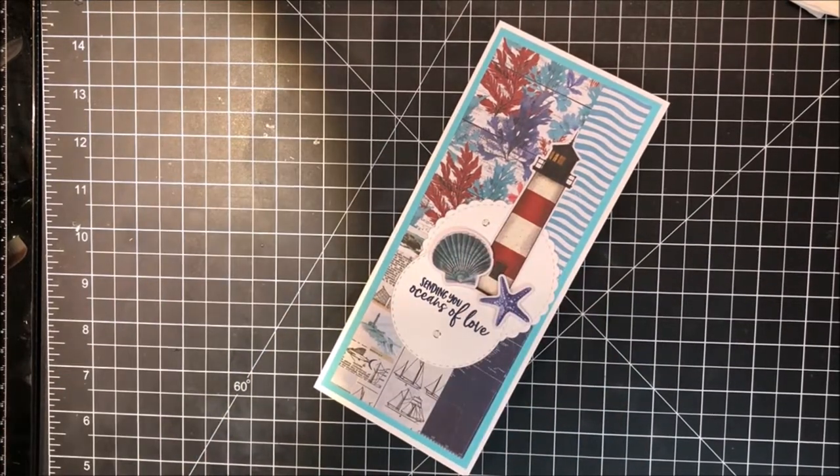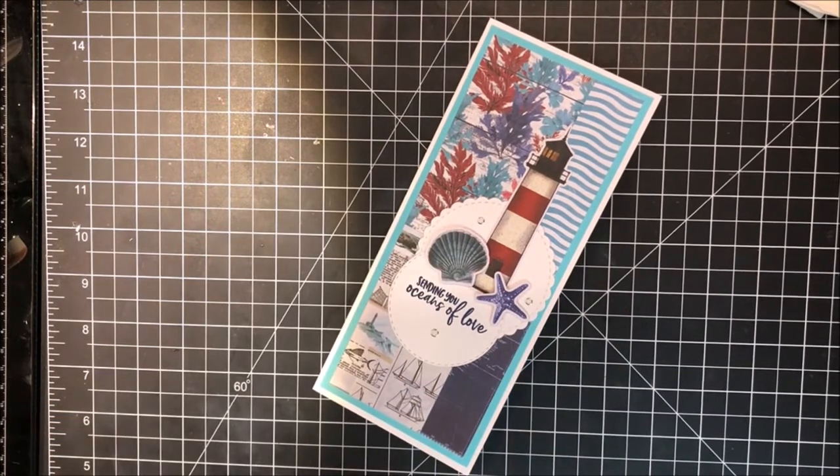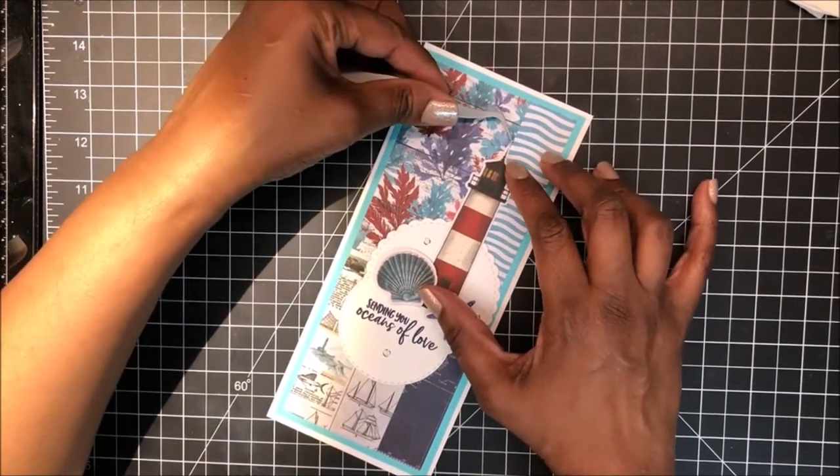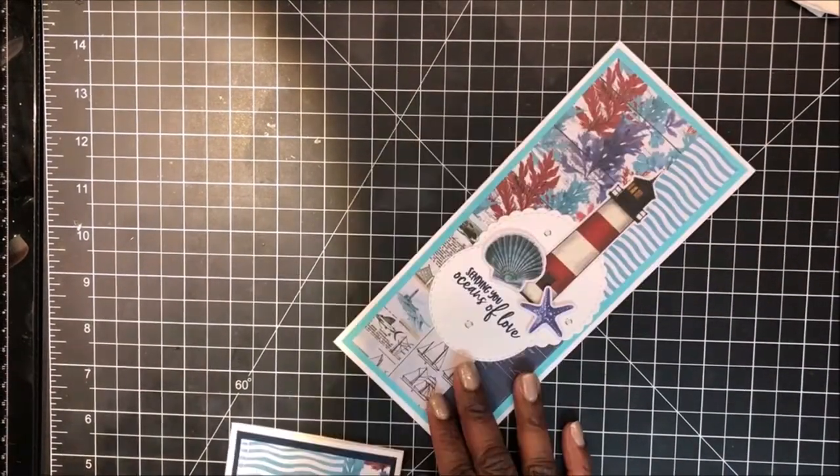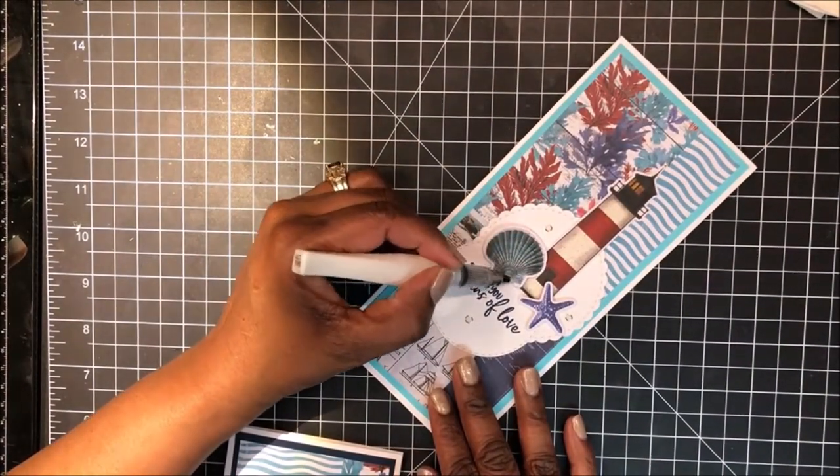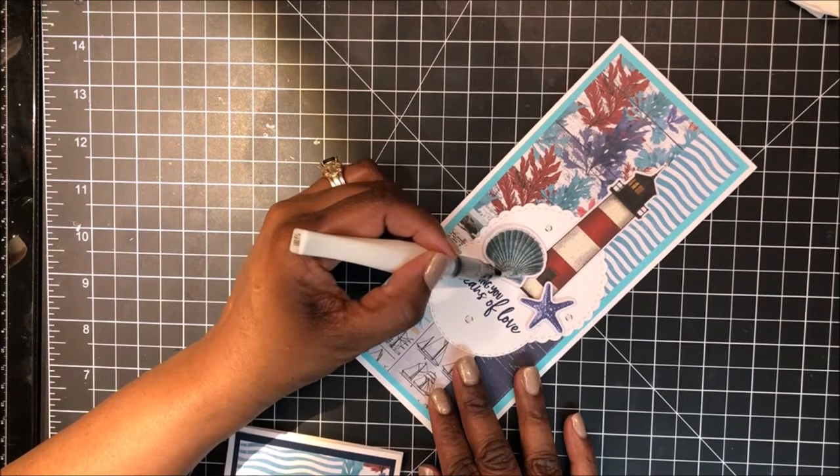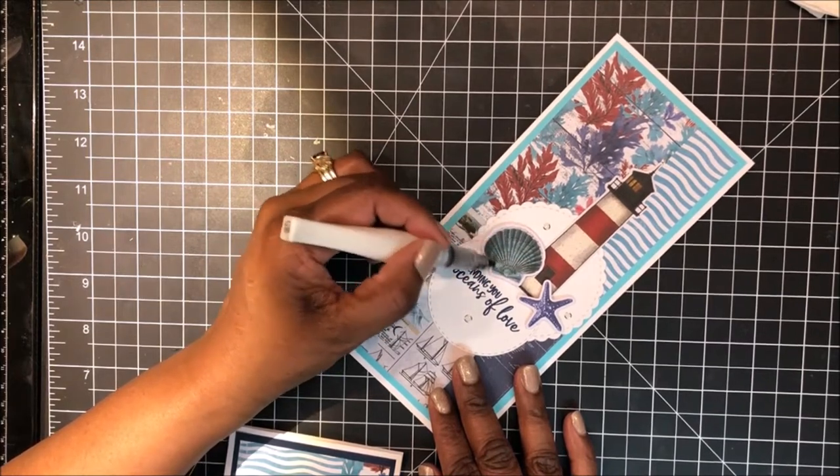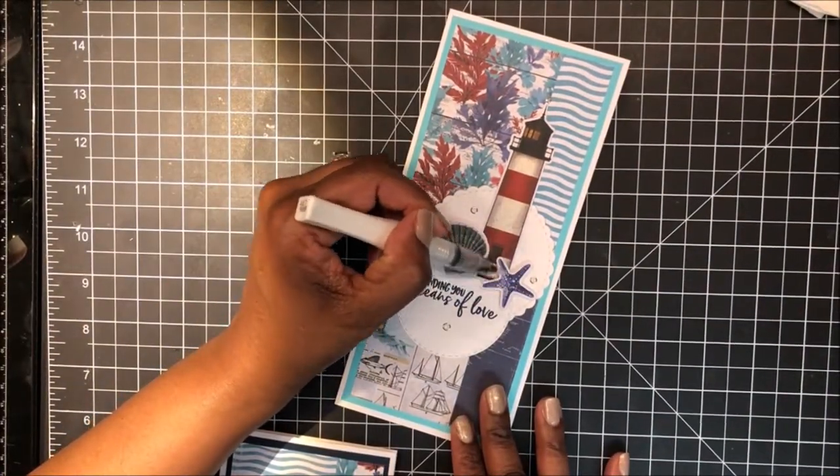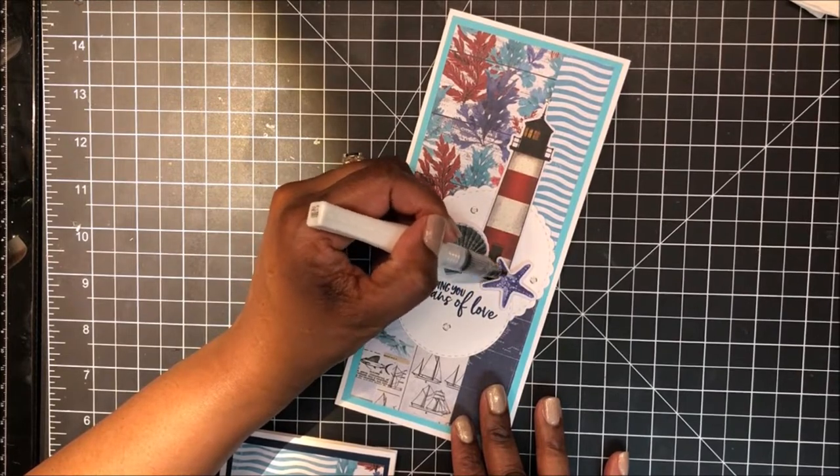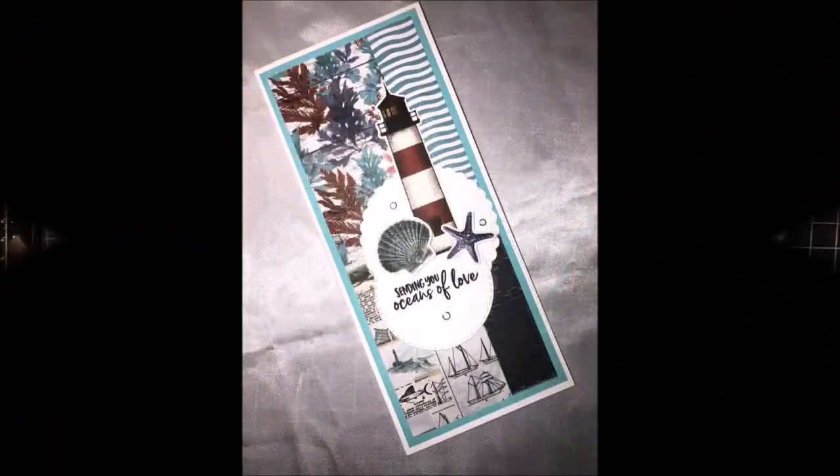And now I am bringing in some gold Elizabeth crafts designs peel-offs and placing those around my focal images. And I placed one atop my lighthouse tower. So that is my light. I'm bringing in my Wink of Stella and coloring in my starfish and my clamshell. Really pretty. Adds a lot of shimmer. Don't think you'll be able to see it quite that well on the video, but believe me in person, it is very nice. And here's a look at the three cards I made using this design.